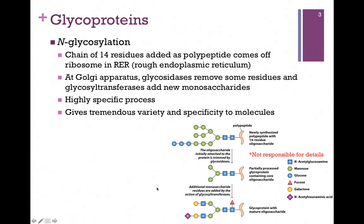In other words, we might have the same protein but have different carbohydrate units attached, and they might serve different functions. In this illustration from your book, there is a legend on the right illustrating that the different shapes and colors represent different sugar residues that are added and removed. You are not responsible for these details. All you need to remember about N-glycosylation is that it involves adding a chain of 14 residues to asparagine as it comes off the ribosome, and that it's further processed at the Golgi apparatus — some enzymes clip off residues, others add more.